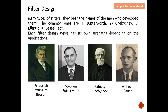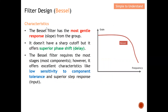Let's take a look at Bessel first. The Bessel filter has the most gentle response from the group, which means they don't have a very steep skirt. The Bessel function has the most gentle roll — which means they have the worst roll-off factor. It does not have a sharp cutoff, but it offers superior phase shift and therefore the shortest delay. The Bessel filter requires the most stages, hence the most components, and is probably one of the most expensive methods. However, it offers excellent characteristics like low sensitivity to component tolerance.